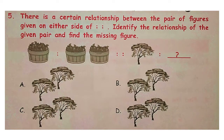There is a certain relationship between the pair of figures given on either side of the colon. Identify the relationship and find the missing figure. The answer is option B because the first basket contains 6 apples which divides equally into 2 baskets of 3 apples each. Similarly, 4 birds on the tree should be divided equally into 2 trees having 2 birds each. So the answer is option B.